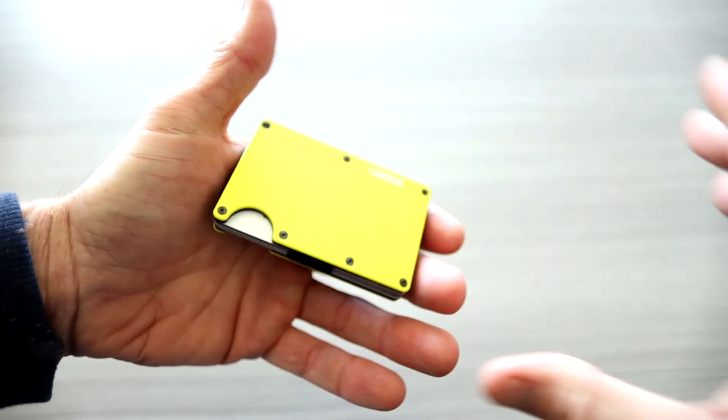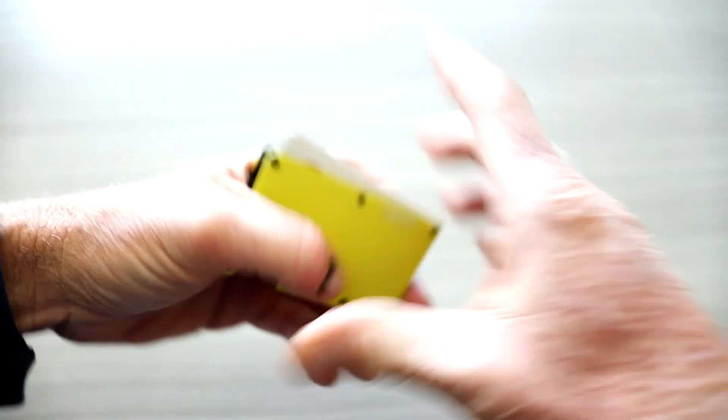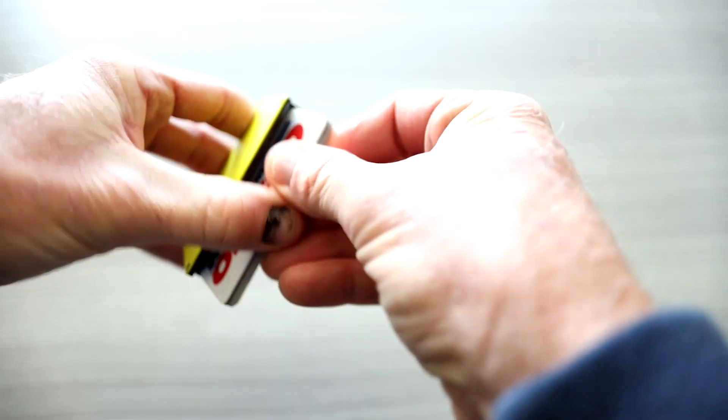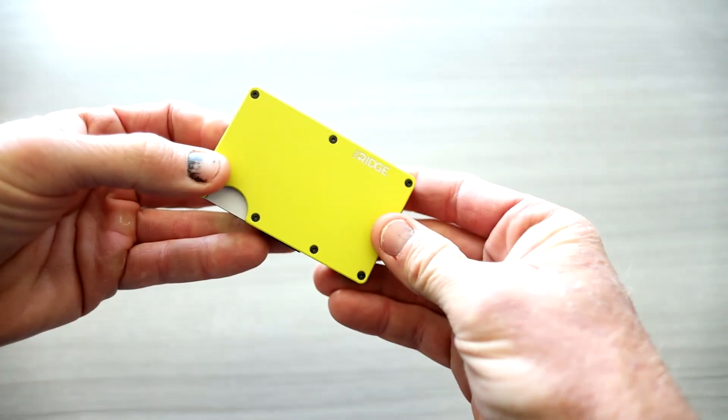What I do is I grab it like this with my thumb. I bring it up, and then I pull out all the cards, which of course you can do just like that. Fan through them. Slip it back in as we can see here.